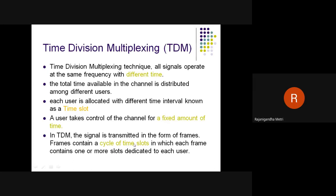In TDM, signals are transmitted in the form of frames, and these frames contain a cycle of time slots. For example, if there are 10 users, there are 10 time slots forming a single frame. After those time slots are utilized, the process repeats for the next frame. Each frame contains one or more slots dedicated to each user.